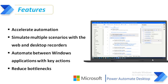What kind of features does Power Automate Desktop provide compared to other RPA tools? It will accelerate automation with an easy-to-use visual designer, simulate multiple scenarios with web and desktop recorders, automate between Windows applications with key actions, automate web applications, and reduce bottlenecks with flexible exception handling. These are all the features available in Power Automate Desktop.